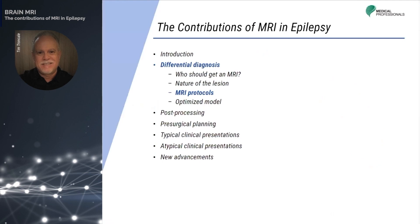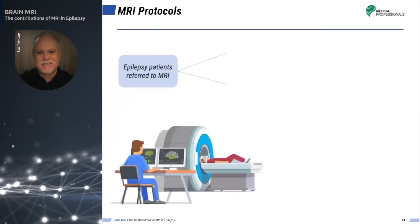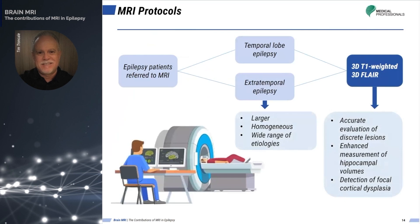Now let's define the protocols to be applied during MRI when epilepsy is suspected. After finding the disease area through clinical and EEG examinations, MRI should be performed. A well-designed protocol will generate information showing optimal volumes for virtual assessment and maximized output data for post-processing. Two types of epilepsy patients are usually referred for MRI: patients suspected of having temporal lobe disease, and patients with extratemporal lobe or neocortical epilepsy.